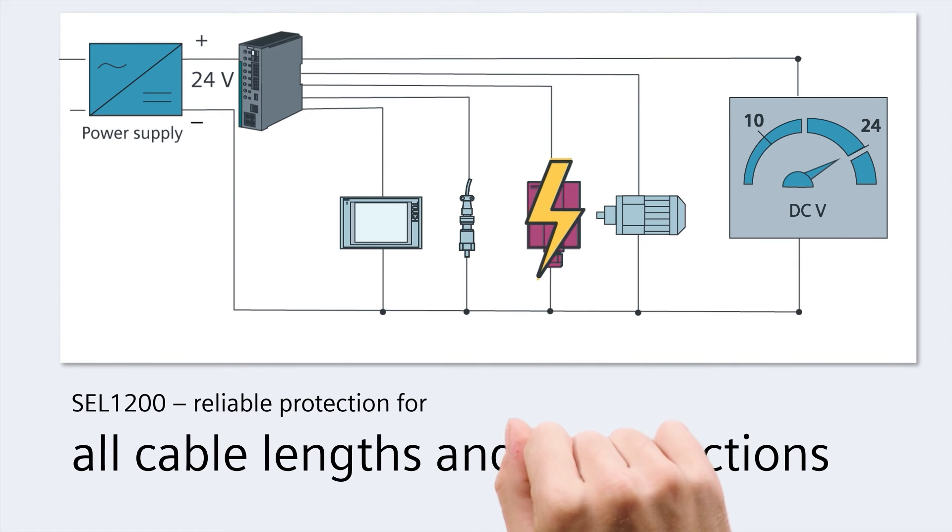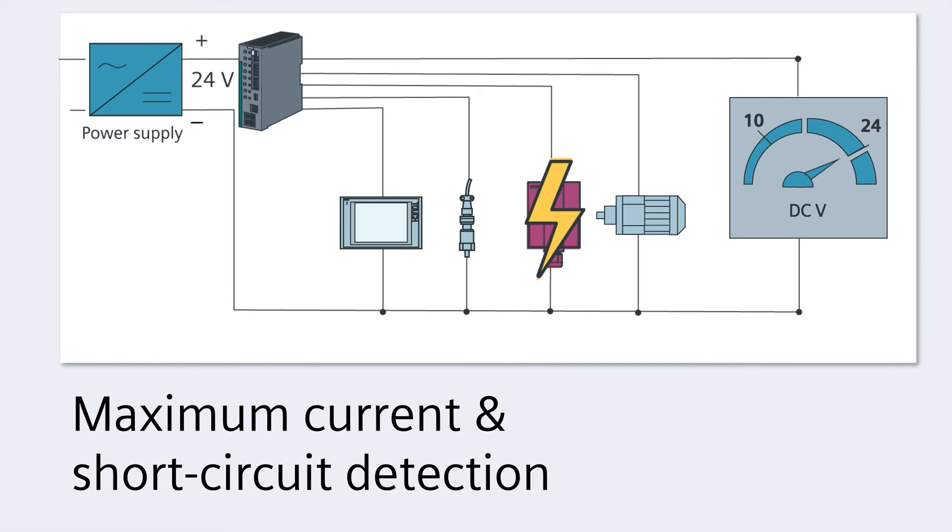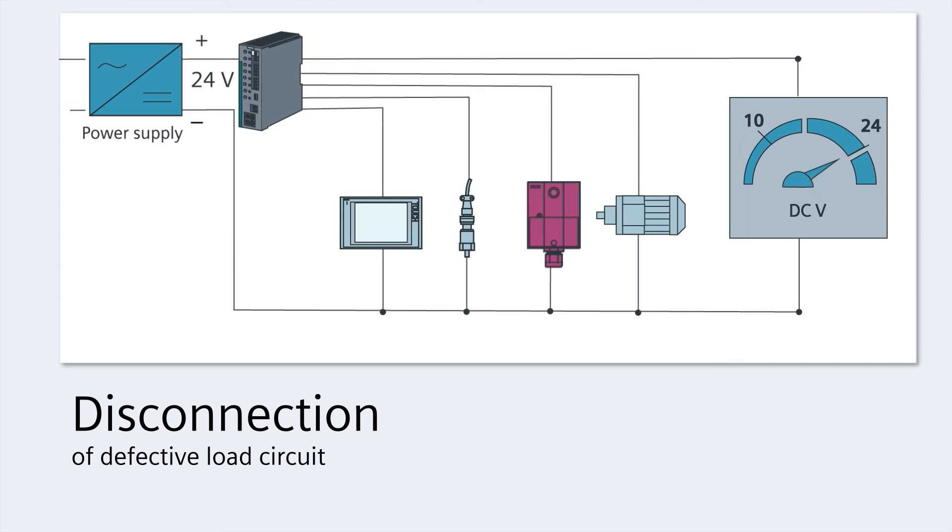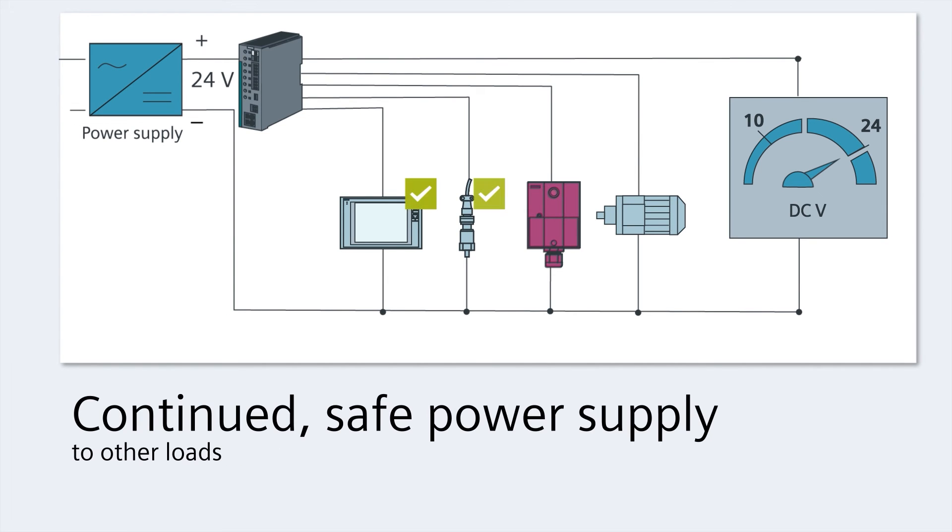In the event of a short circuit, the benefits are clear. The SEL1200 immediately detects the short circuit and disconnects the defective load circuit. Power continues to flow to the other loads without a voltage dip. This prevents a total plant shutdown.